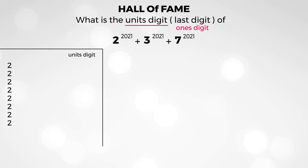I will first start with 2, and look at powers 1 through 8. So 2 to the power of 1 is 2, and therefore the units digit is 2. 2 to the power of 2 is 4, units digit is 4. 2 to the power of 3 is 8, units digit is 8.